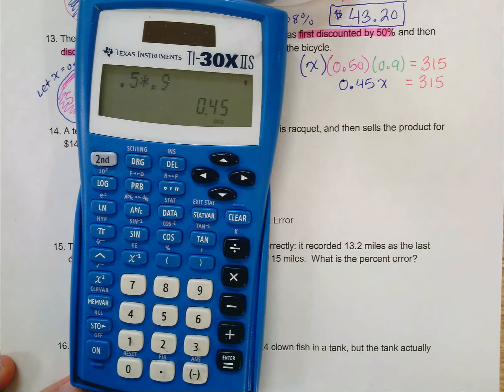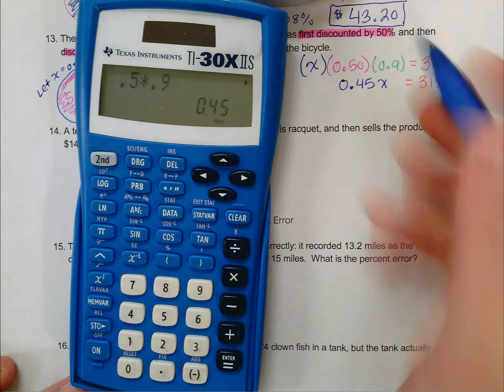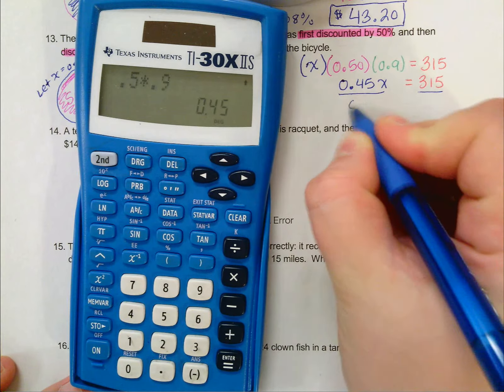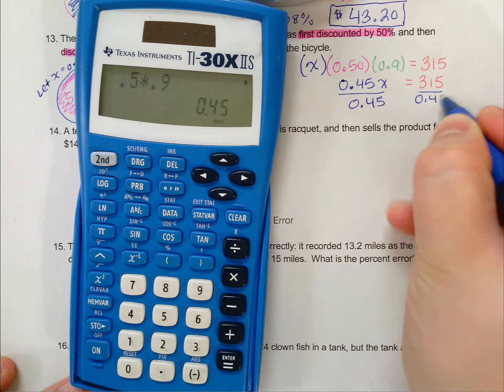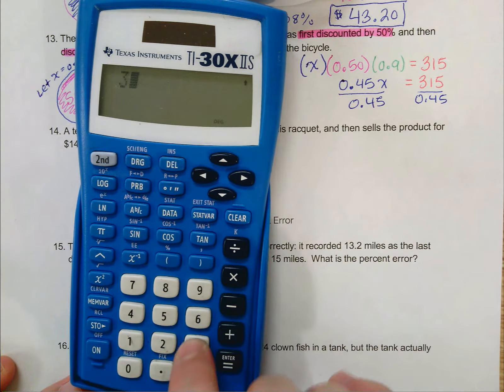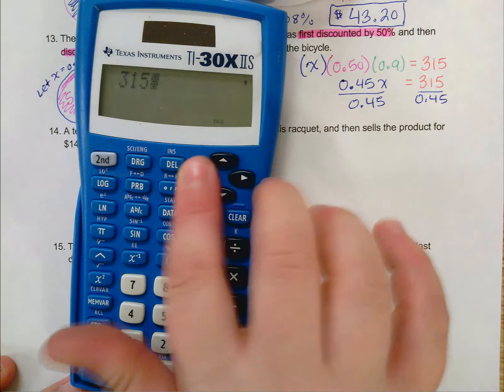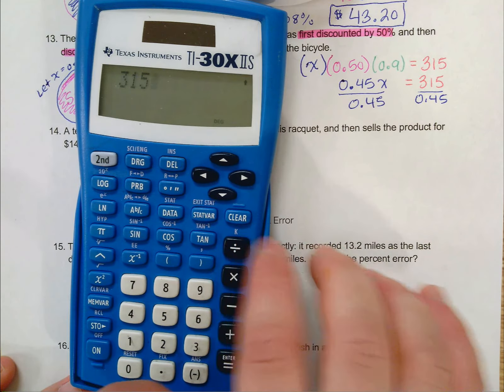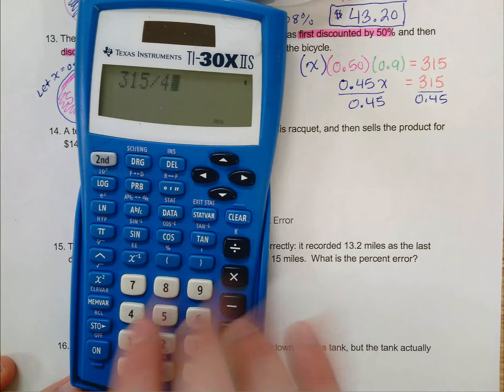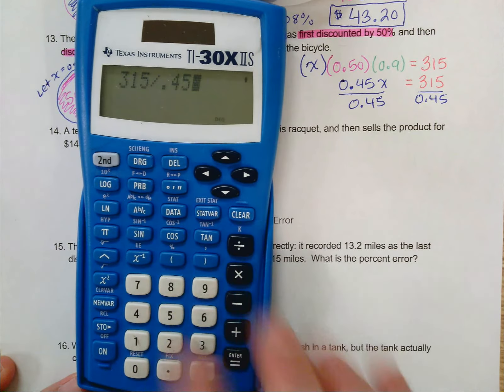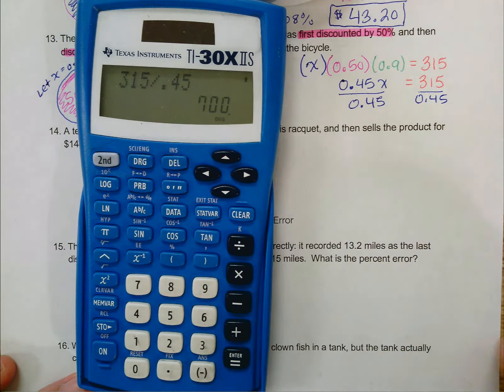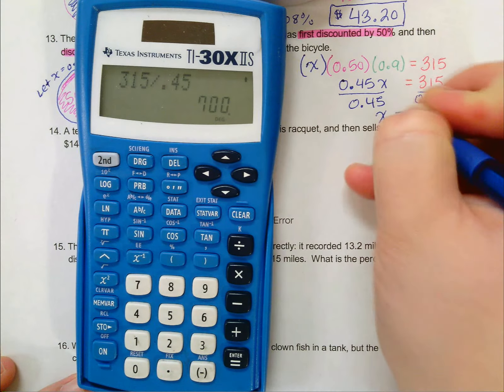To finish isolating X, I need to divide both sides by 0.45. When I do this, on the left I will just get X. And on the right, I'll get 315 divided by 0.45, which is 700. So X equals 700.